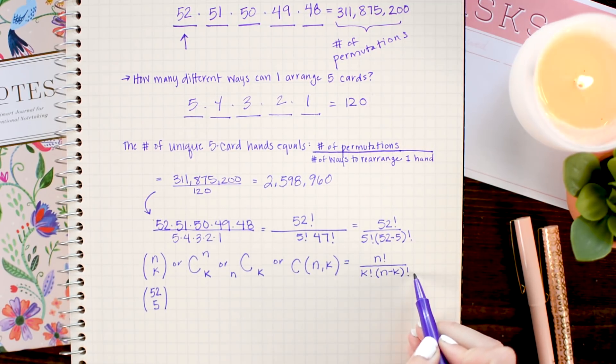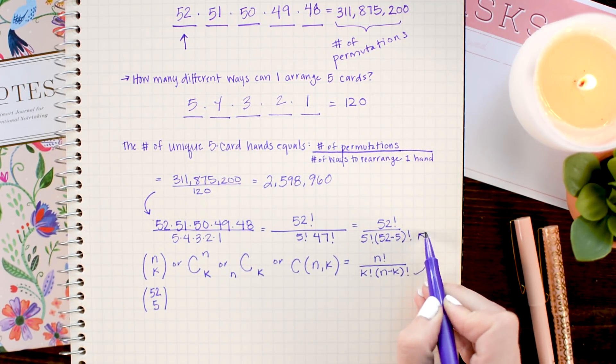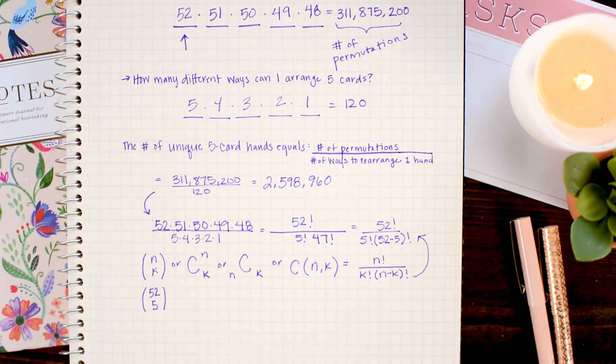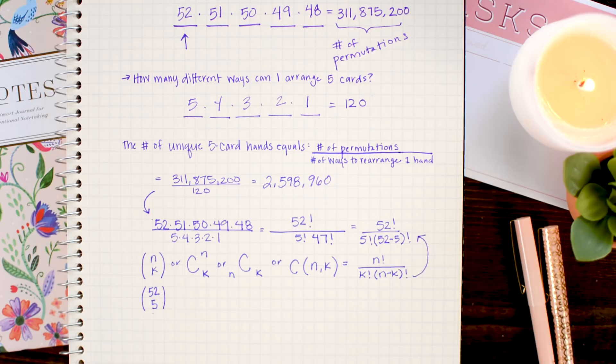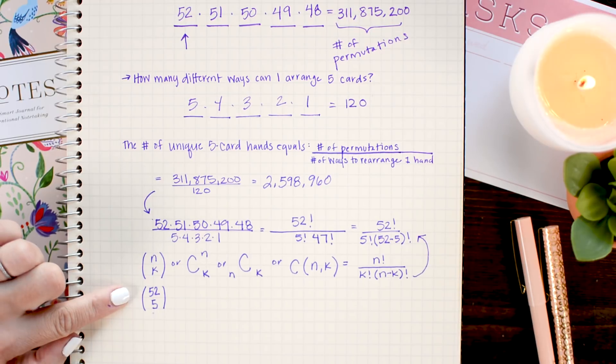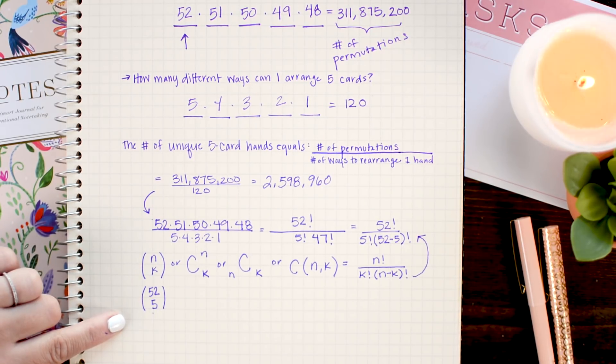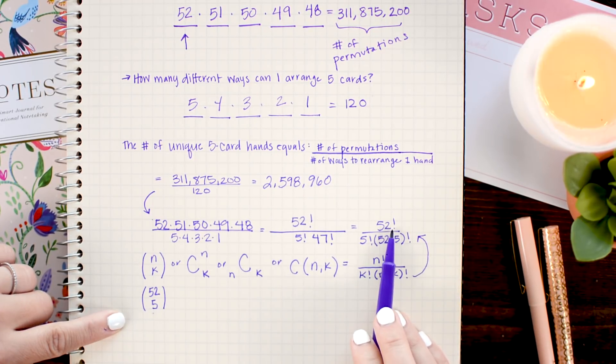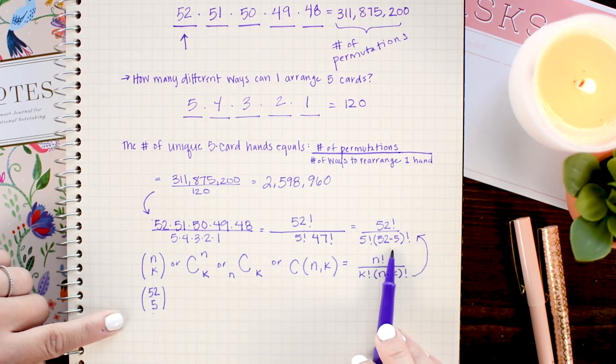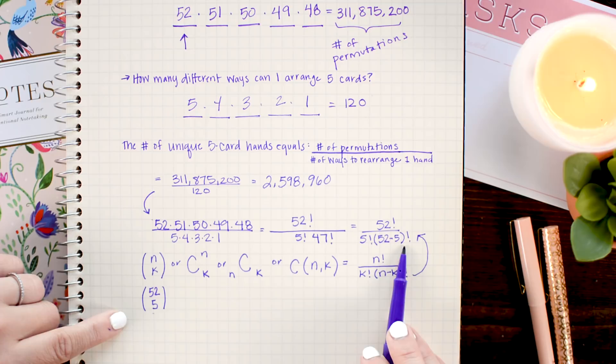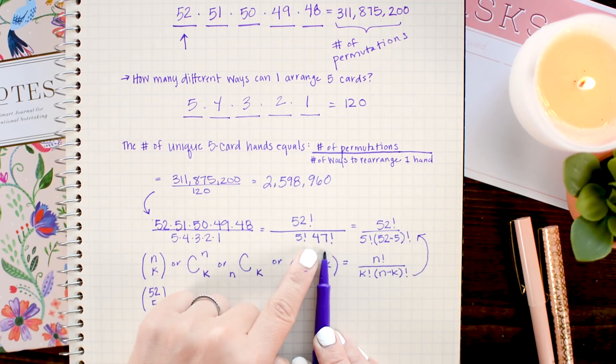And the formula for them is N factorial over K factorial times N minus K factorial. And as you can see, that looks a lot like what we wrote up here. So, this is the same as 52 choose 5. And when you say it out loud, it makes a lot of sense because I have 52 cards and I want to choose 5 of them. Plugging it into the formula, we would have 52 factorial over 5 factorial times 52 minus 5 factorial.